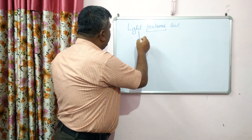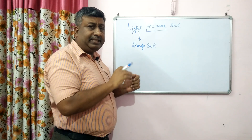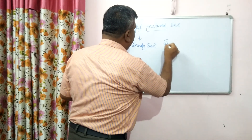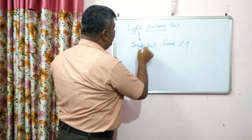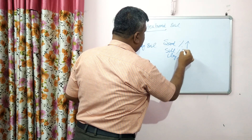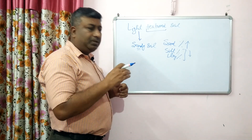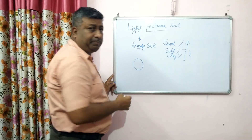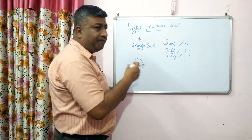Light textured soils are actually sandy soils. Sandy soil doesn't mean it has no clay or silt — it does have silt and clay, but the sand proportion is much higher. Sand percentage is very high in light textured soil and silt and clay proportion is very low. Sand particles range from 0.2 to 0.02 mm, making them large particles compared to silt and clay.